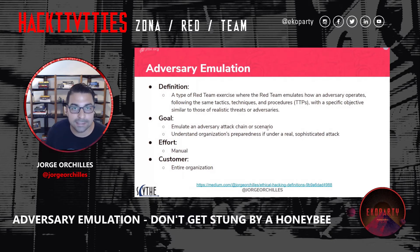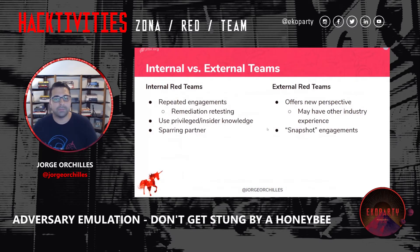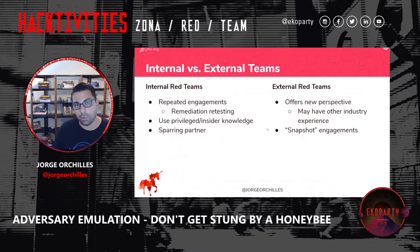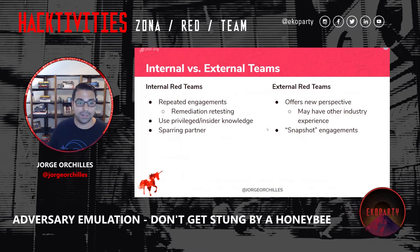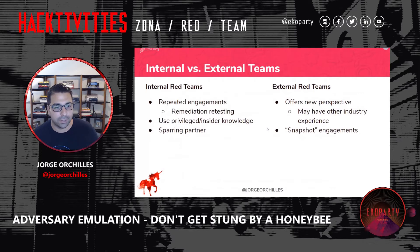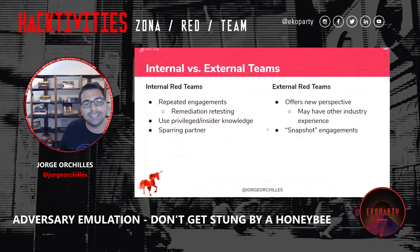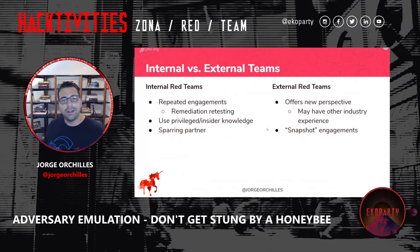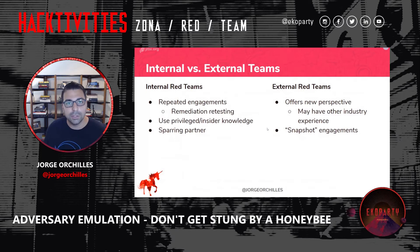We want to understand if the organization is prepared for a real attack. Some organizations have internal red teams, some don't, and both are good. An internal red team means your organization really understands the value here — you repeat a lot of engagements, you spend a lot of time retesting, and you have insider knowledge. Internal red teams shouldn't be seen as adversarial to other security teams, but more as a sparring partner. Like in boxing or MMA — when you train, you train with a sparring partner. You hit each other, but never to cause damage. That's what an internal red team should do for the internal blue team.